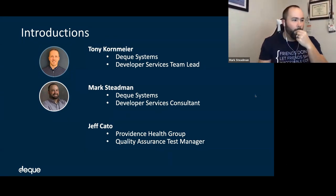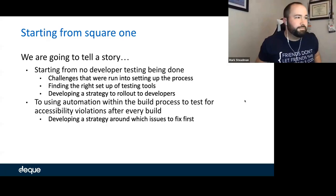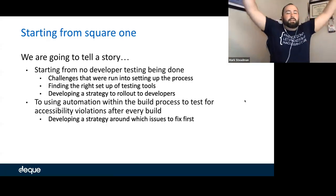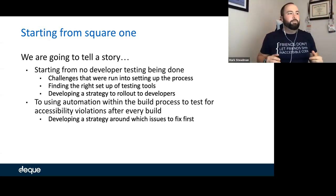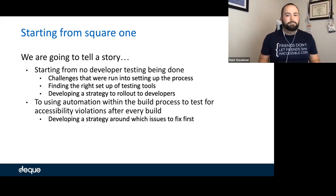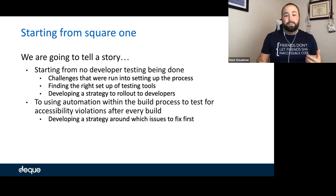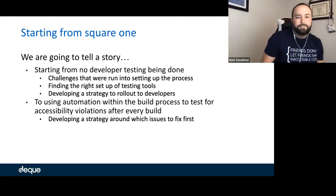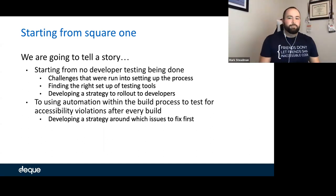So without further ado, I'm going to jump right into why we're here. Today, we're going to tell a story about starting from no developer testing, through the challenges of setting up this process, finding the right set of testing tools, developing a strategy to roll out testing tools to developers, and using automation in the build process to test for accessibility violations after every build.